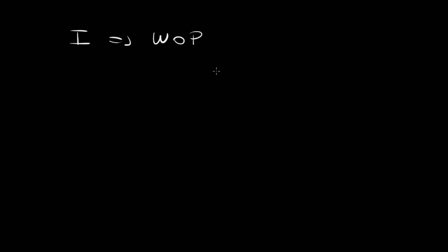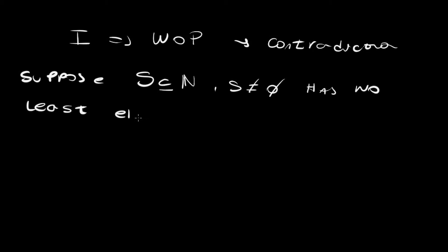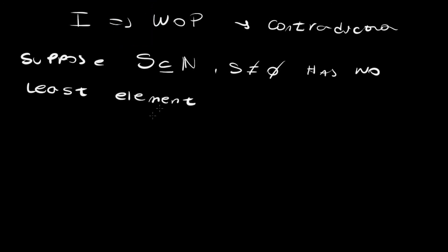Let's start with the first implication: we want to prove that induction implies the well-ordering property. To do this, we're going to use proof by contradiction. Suppose S is a non-empty subset of the natural numbers that has no least element.